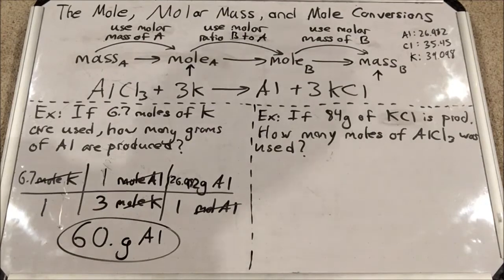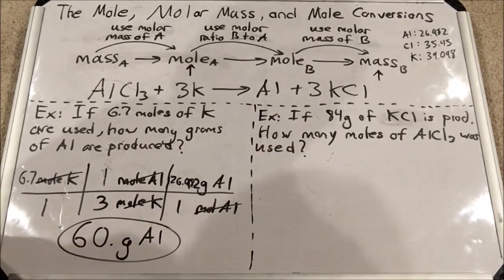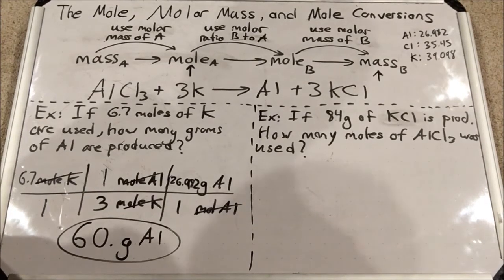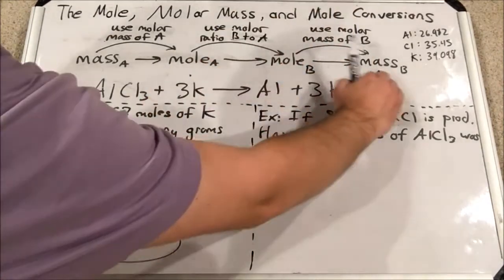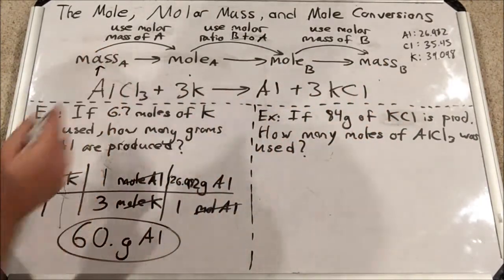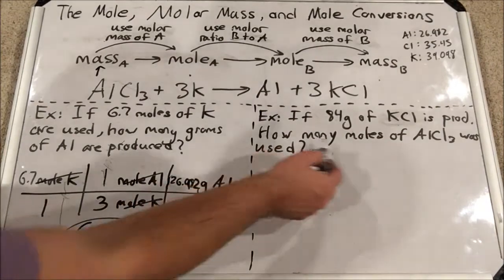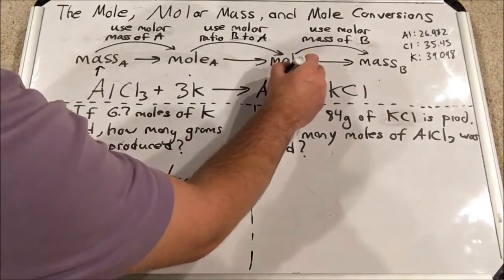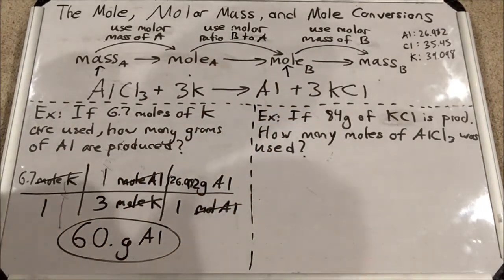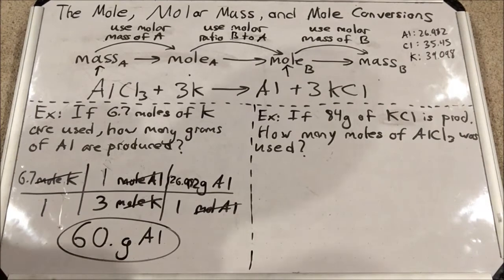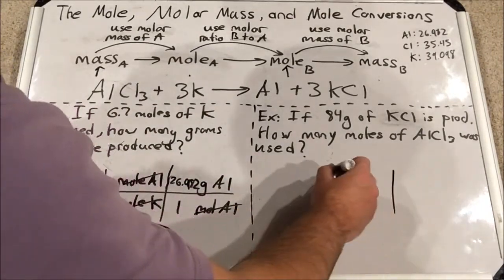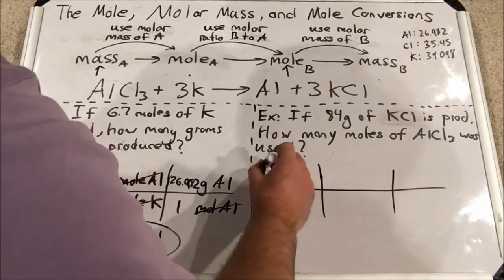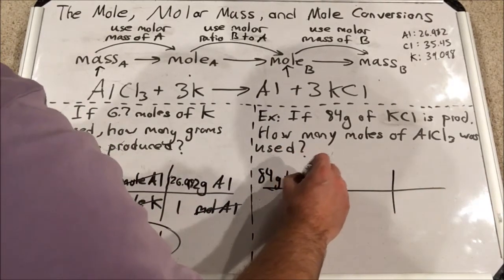Next example: if 84 grams of potassium chloride (KCl) is produced, how many moles of aluminum chloride was used? We're starting with mass of KCl and going to moles of another substance — moles of AlCl3. That's a two-step process. I start with 84 grams KCl over 1, then use the molar mass of KCl to convert to moles KCl.